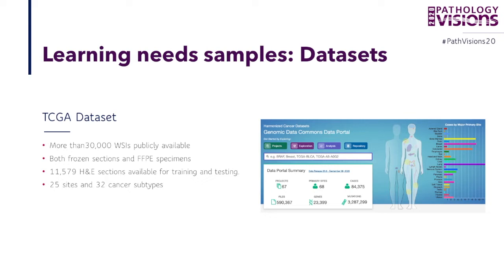One of the largest — probably the largest — public datasets is the TCGA dataset available through the GDC portal. It contains more than 30,000 whole slide images, both frozen sections and FFPE specimens. Above 11,000 of them are available for training and testing — H&E sections that are diagnostic and of good quality. That's from 25 different primary sites and 22 cancer subtypes. Despite all its shortcomings discussed in the literature, we don't have anything better publicly available as a community.